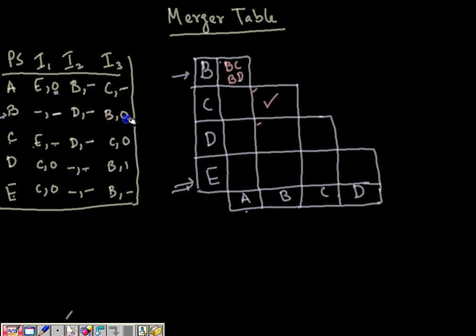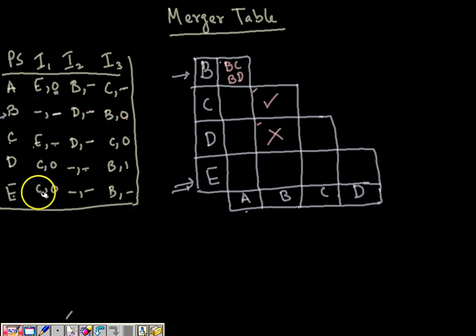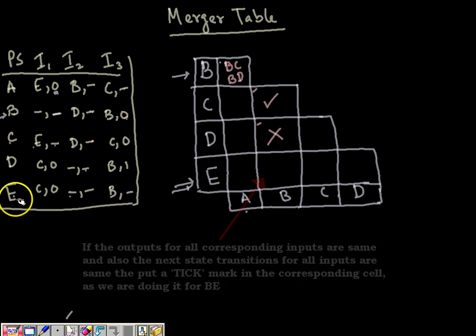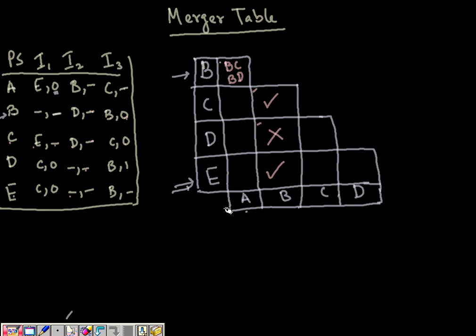For B-D: not specified, not specified — same; zero and one — these differ. So B-D is not compatible; we mark this cell as not compatible. For B-E: not specified and zero — same; not specified and not specified — same; zero and not specified — same. For the next states: not specified and C — same; D and not specified — same; B and B — same. So B-E is fully compatible; put a tick mark. If two states are compatible with identical next-state transitions, just put a tick mark. If transitions differ but outputs are the same, write the differing state pairs as dependencies.